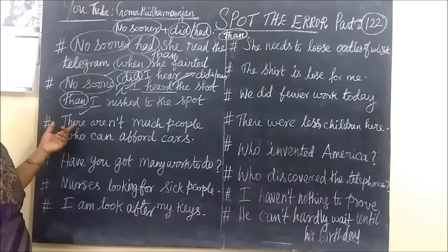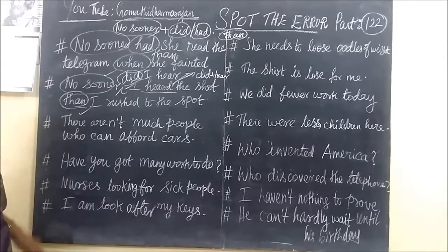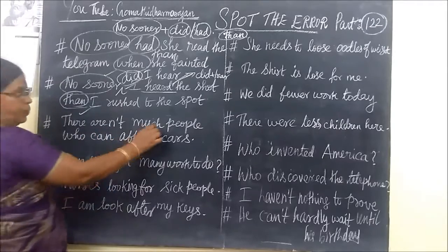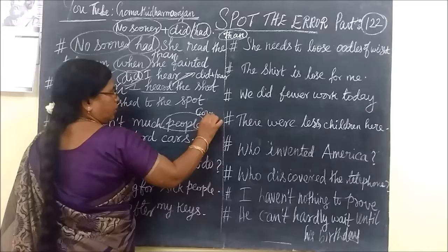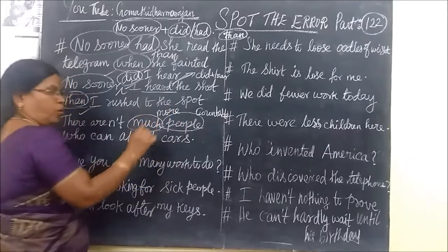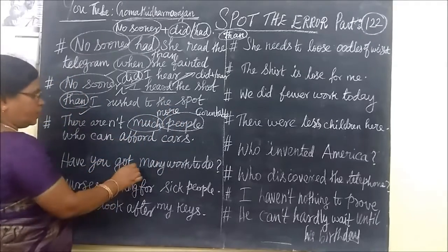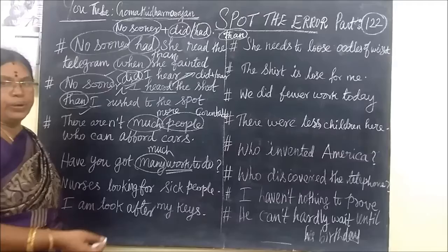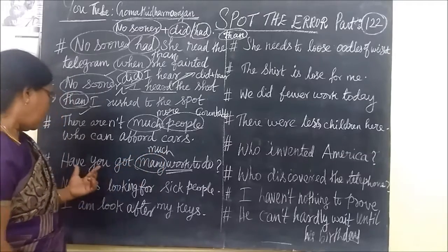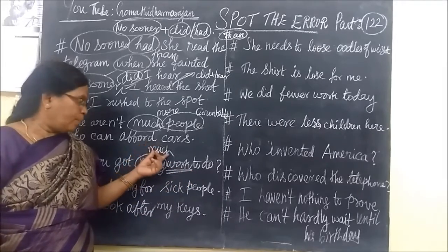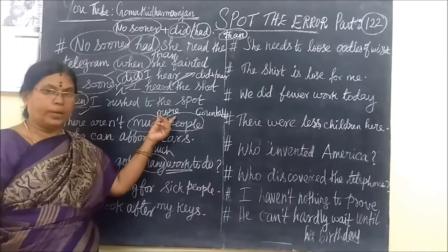See the following question: 'There are not much people who can afford cars.' People are countable. When something is countable, instead of 'much' you have to use 'many.' 'Much' is used for uncountable things. For example: 'Have you got much work to do?' — here 'work' is uncountable, so you use 'much.' People are countable, so you use 'many.'